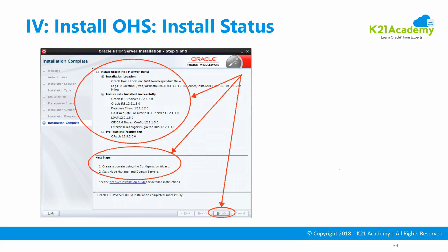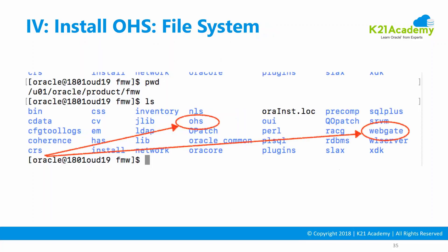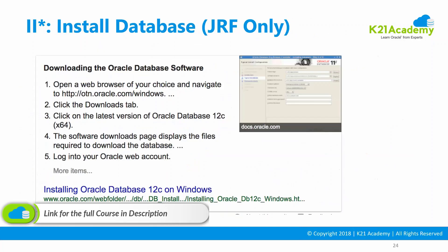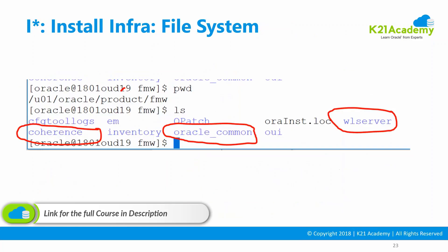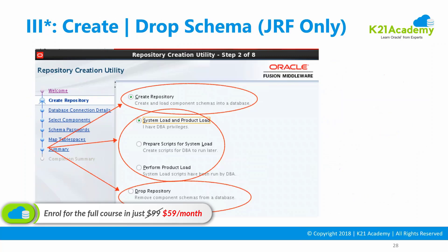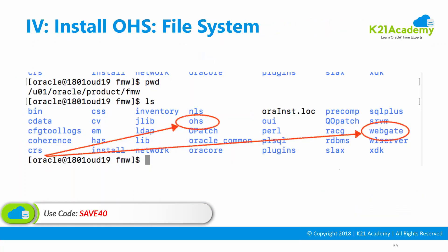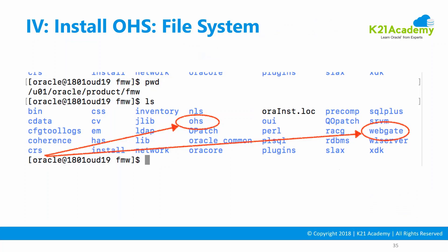After installation, let's look at what extra you get on the file system. When you installed Oracle Fusion Middleware Infrastructure you got Coherence, Oracle Common, and WebLogic Server. When you install Oracle HTTP Server you additionally get the OHS directory — this is where the Oracle HTTP Server software resides. It is also called the Oracle product directory, prod dir, OHS dir, or OHS folder. Note: Oracle Home is still the top-level FMW folder.